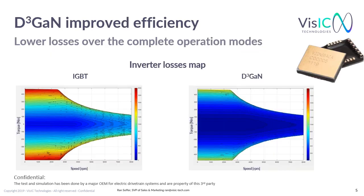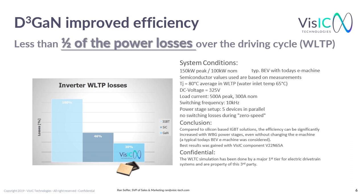Here you can see an inverter loss map done by a top-tier OEM. Blue color represents low losses and red color represents high losses. The tests show an advantage for D-power 3 over the complete inverter operating points. The low switching losses of D-power 3 provide a greater benefit when operating at low torque when less current is required. The losses over the complete driving cycle can be reduced by less than 50%, as shown in this slide. This was done by a top-tier OEM and the chosen driving cycle was WLTP. The specific test details are specified on the slide, but you can see a clear advantage for wide-bandgap technology, and especially for the D-power 3 solution, with clear performance advantages that will affect car cost by reducing battery size, weight, cooling system, etc.